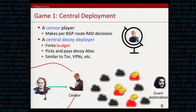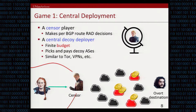This kind of deployment strategy is similar to how many of today's circumvention systems work. In Tor or VPNs, there's a central authority with some finite budget collected through NGOs or government funding, which it uses for a central deployment of a circumvention system. The central deployer is the first player in this game, and the second player is a censor manager who is able to perform routing around decoys decisions per BGP routes of traffic.